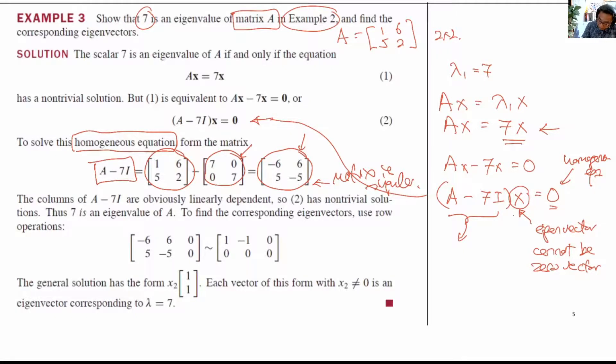And because it has dependent columns, therefore we can find a non-zero x to combine these columns such that the output is 0. So this is the discussion here. This matrix A minus 7I is obviously linearly dependent. It has linearly dependent columns.